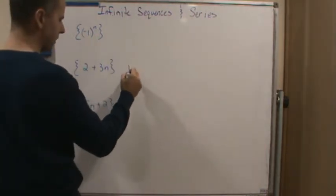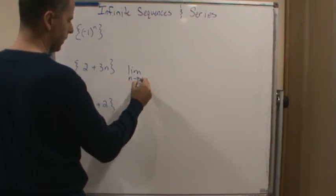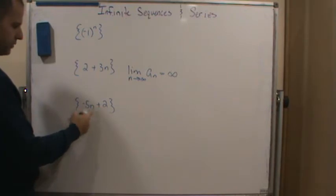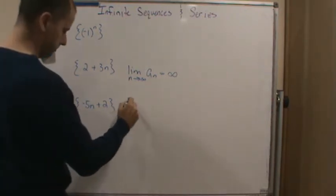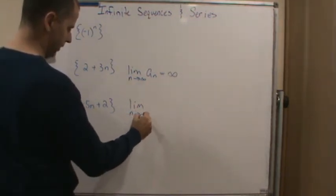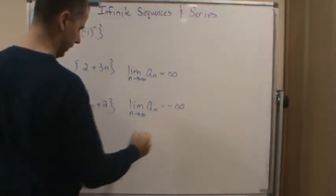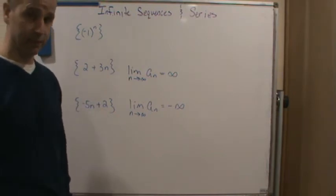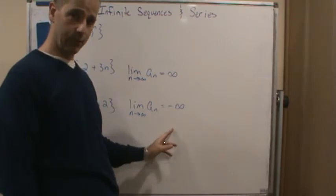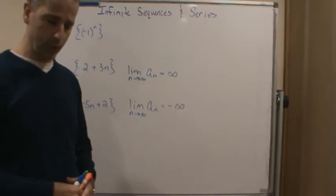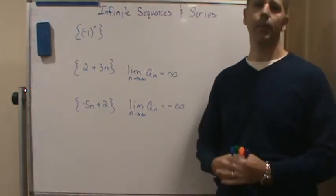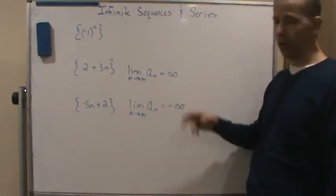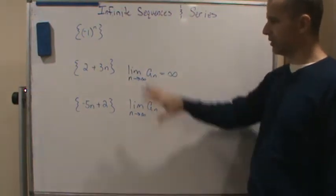In this case, as n approaches infinity, the sequence goes off to positive infinity, so we say the limit as n approaches infinity of a_n equals positive infinity. Similarly, this one gets larger in the negative direction, so the limit as n approaches infinity of a_n equals negative infinity. Just because I write that they equal positive or negative infinity does not mean they converge — this just gives more information about the divergence. Infinity is not a particular value, so both of these are still divergent sequences.